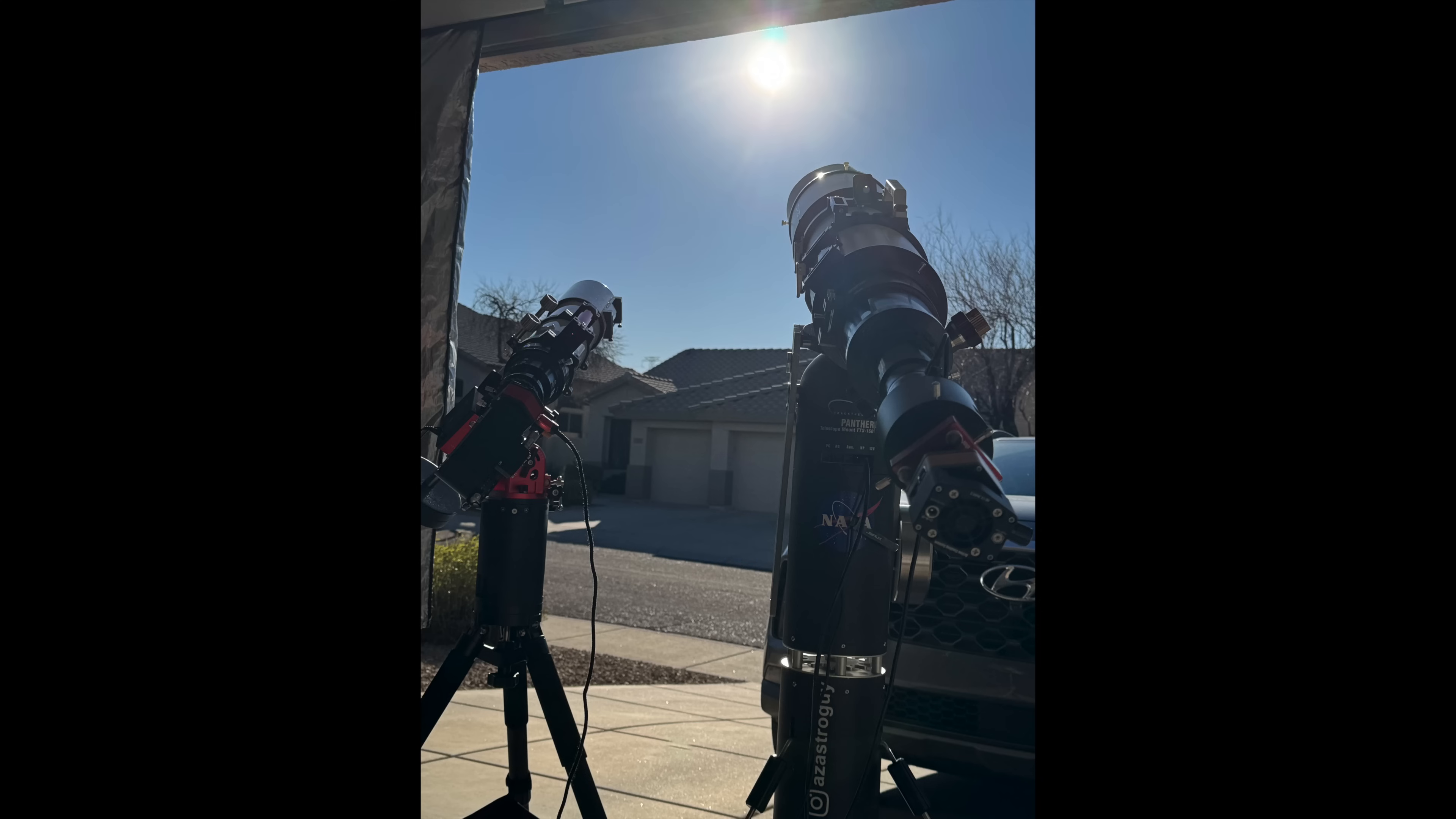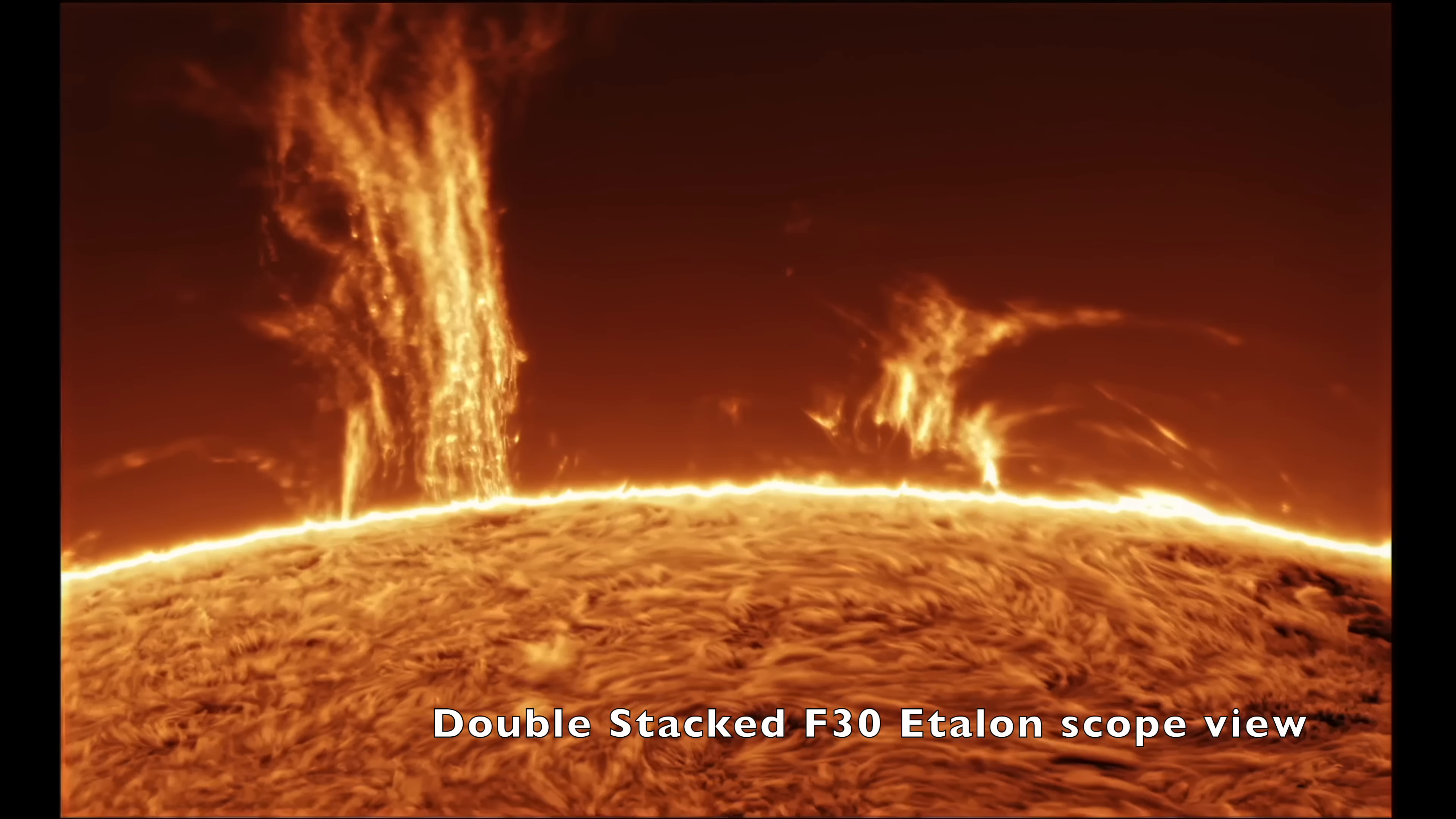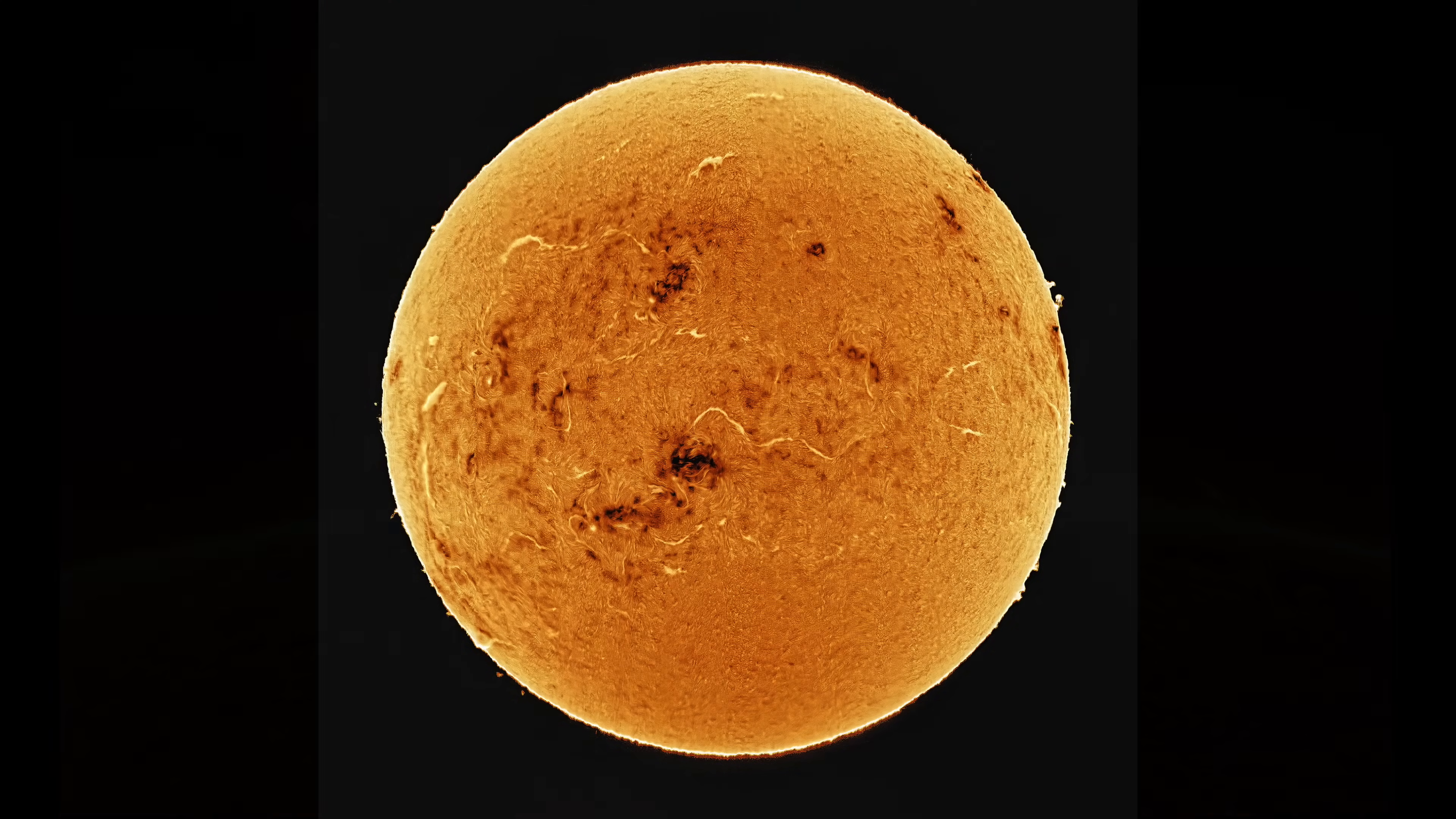And they're generally limited to small to intermediate focal length telescopes up to about 700 millimeters. This also means it's not good for high magnification views of sunspots, prominences, etc. It's really only optimized for full solar disk imaging.